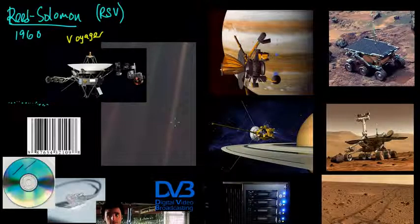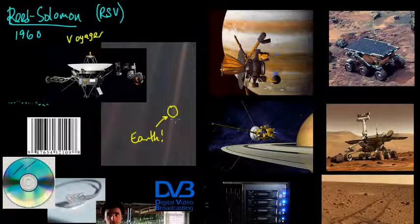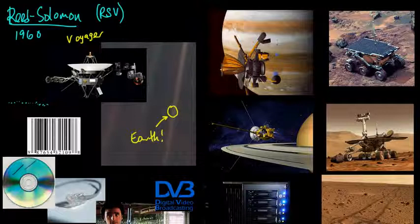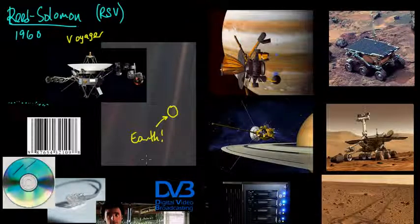That is Earth as seen from beyond Neptune — Voyager 1 took this picture from beyond Neptune and that little dot represented less than one pixel in the image. If it were not for the capacity of these error correcting codes, there is no way we would have been able to get a picture of the required resolution with low enough error to actually make out Earth in this picture. That would not be possible without error correcting codes.